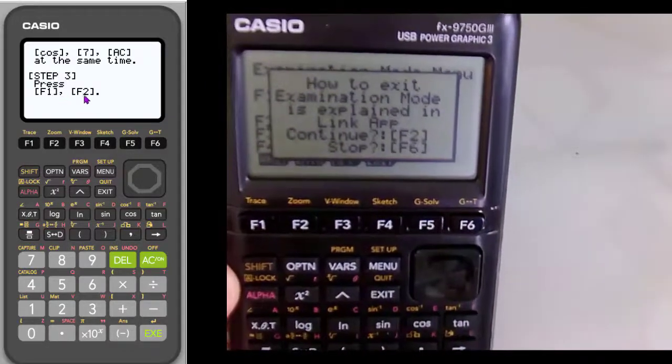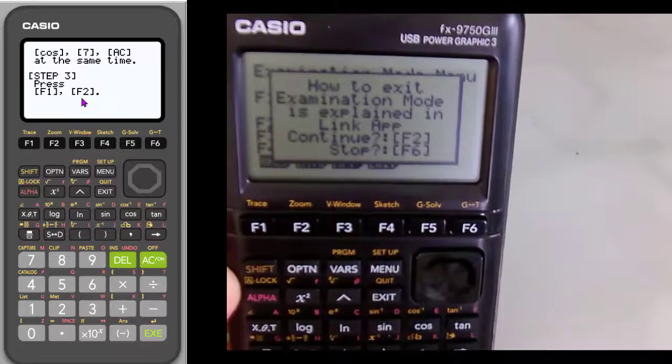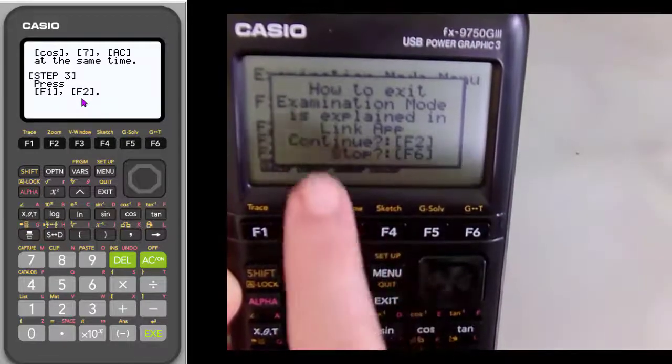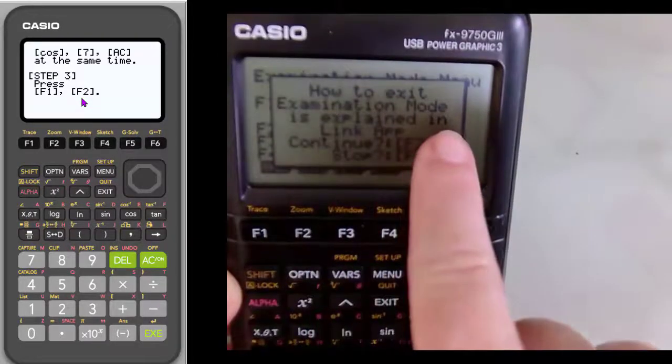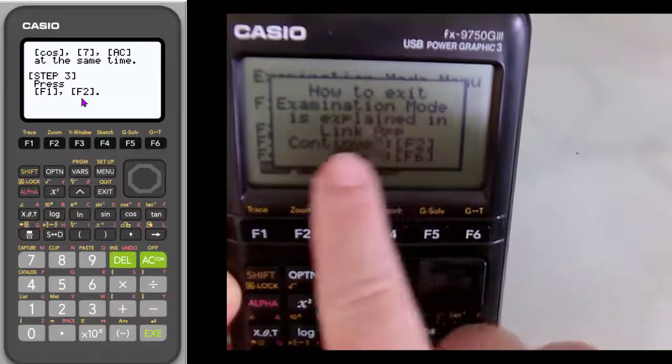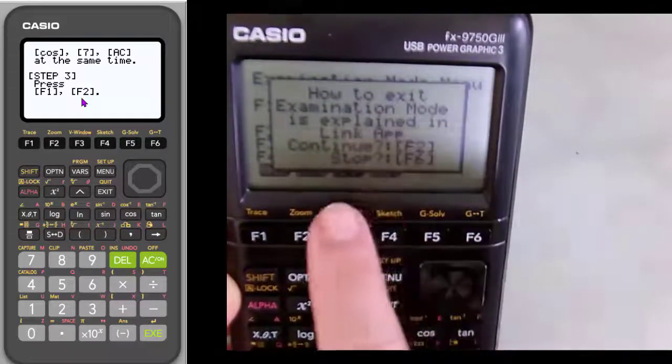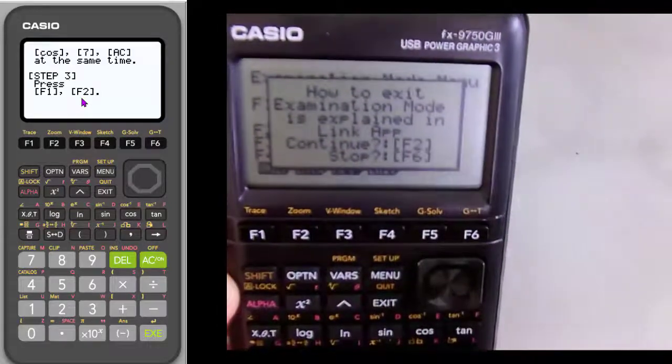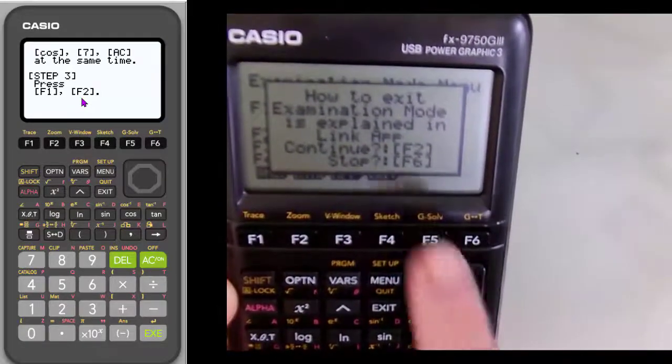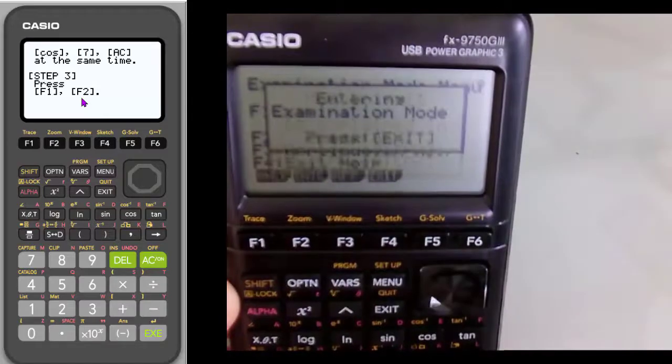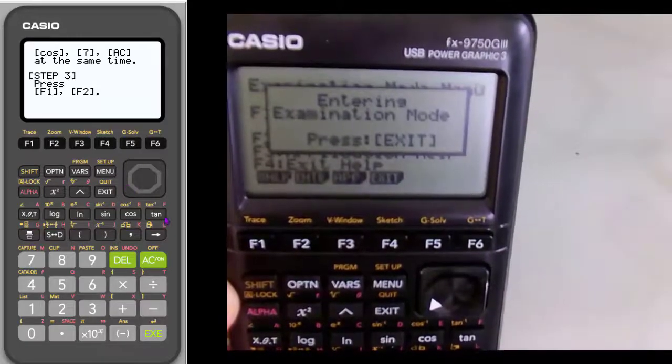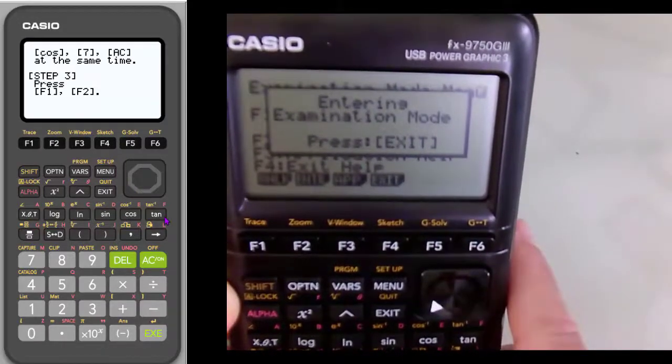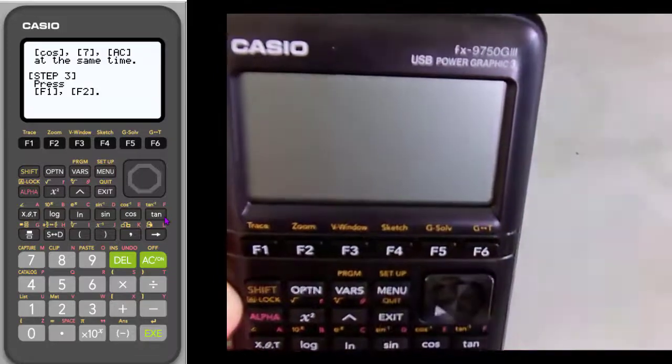And the next one, the step says to hit F2. So what is F2? And if you notice, it's telling me, are you sure you want to do exam mode? It's explained in the link app, which we've already looked at. Do you want to continue? That's F2. Or do you want to stop? So you have the option at this point to change your mind. But we're going to hit F2. And so now it says you are in exam mode. So let's hit exit. And I'm in exam mode.